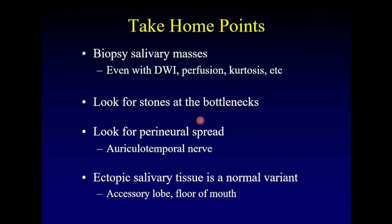Take-home points: We must biopsy salivary masses even if you use diffusion, perfusion, or kurtosis analysis — all of these advanced techniques — it's never enough; you need a tissue diagnosis to be confident about salivary masses. When looking for stones, look at the bottlenecks at the hilum and at the puncta. Look for perineural spread for malignancies and don't forget the auriculotemporal nerve that comes into the infratemporal fossa. Remember that ectopic salivary tissue is a normal variant, and you can see accessory lobes across the floor of the mouth.